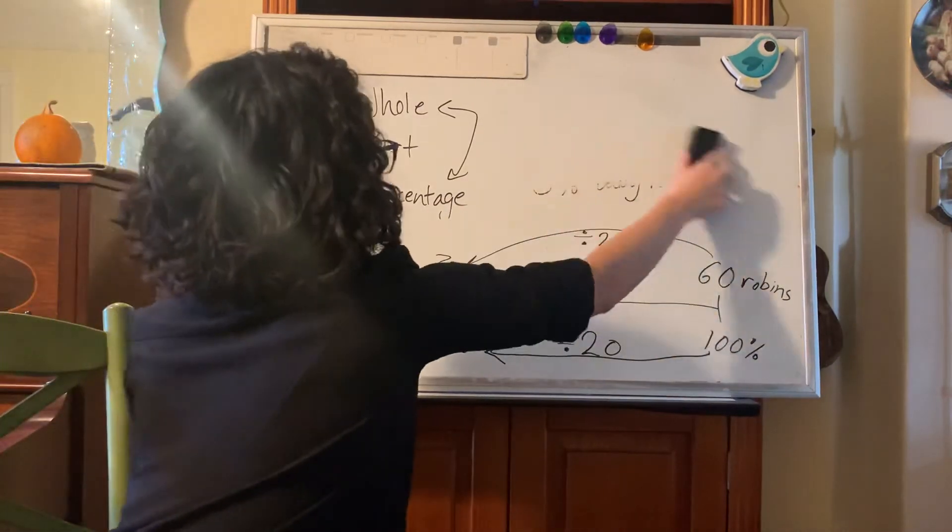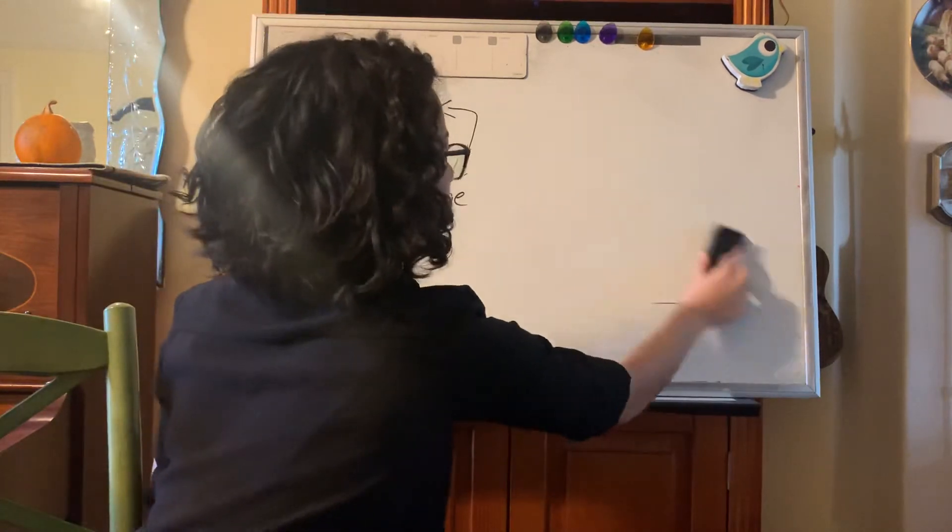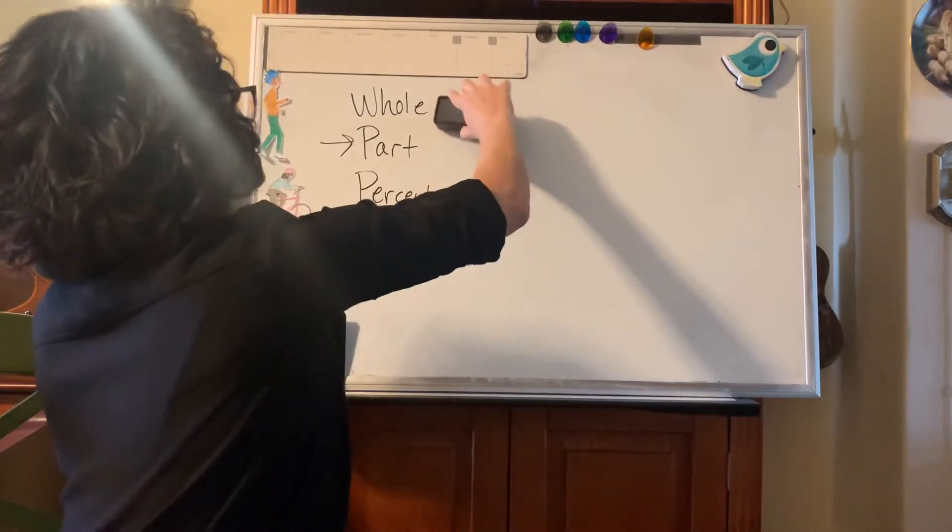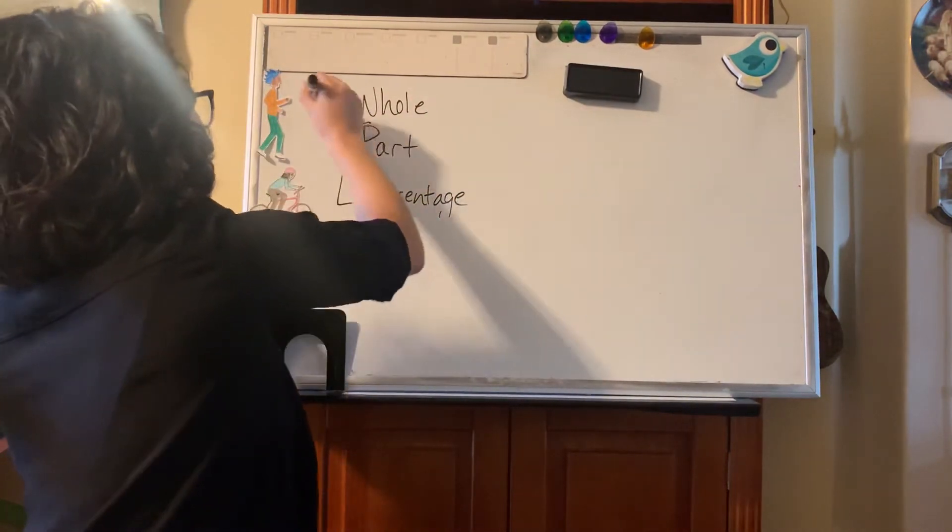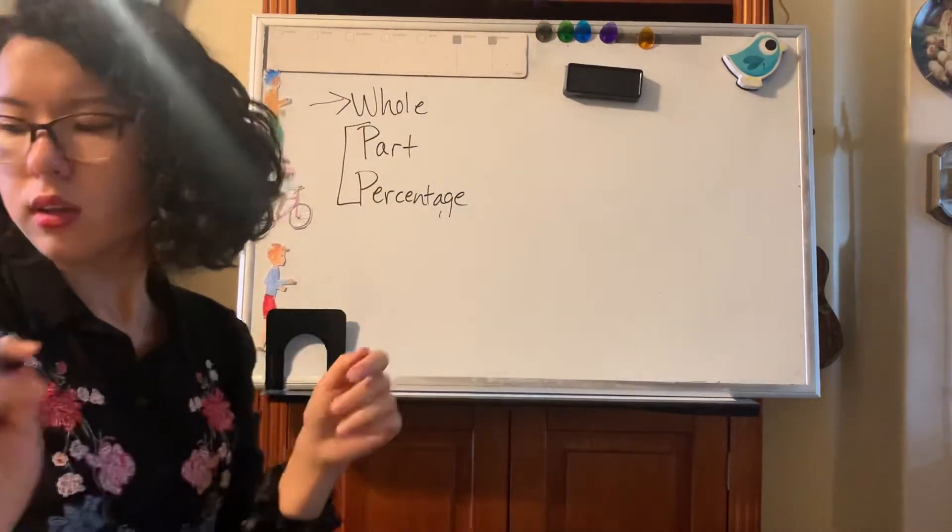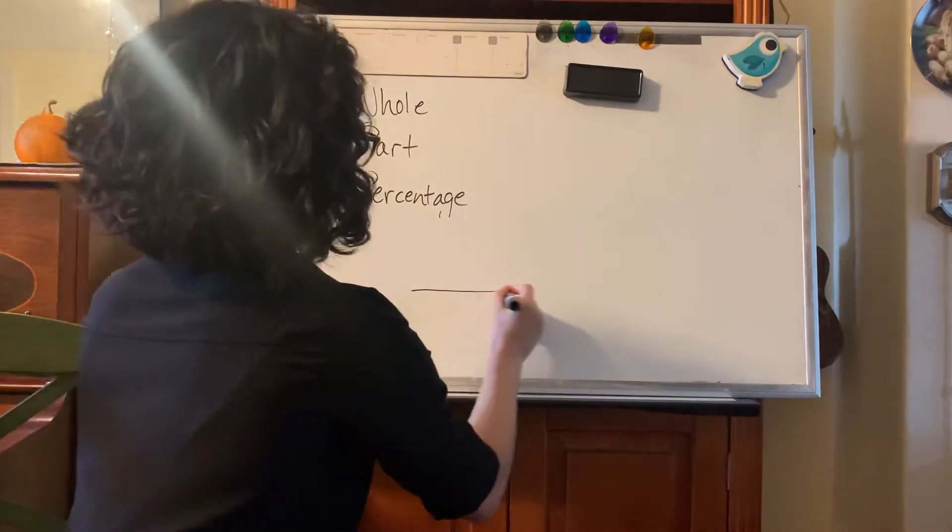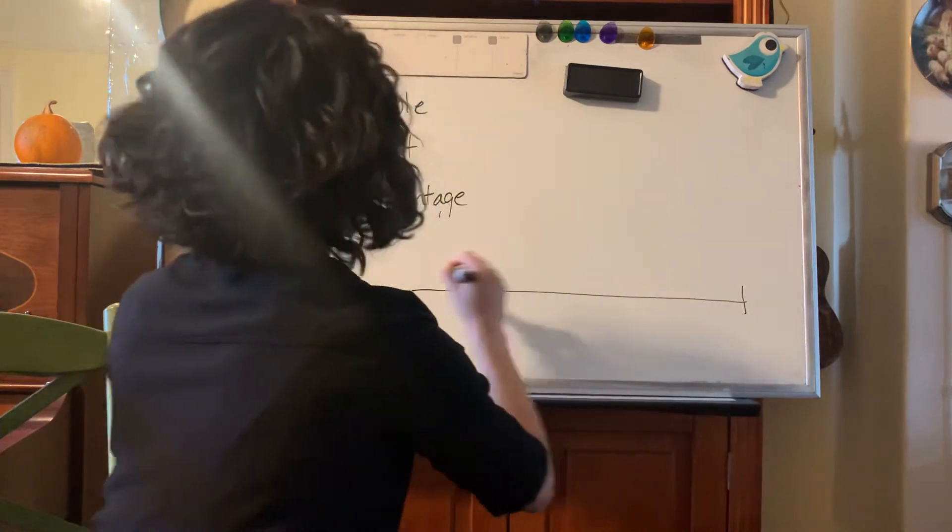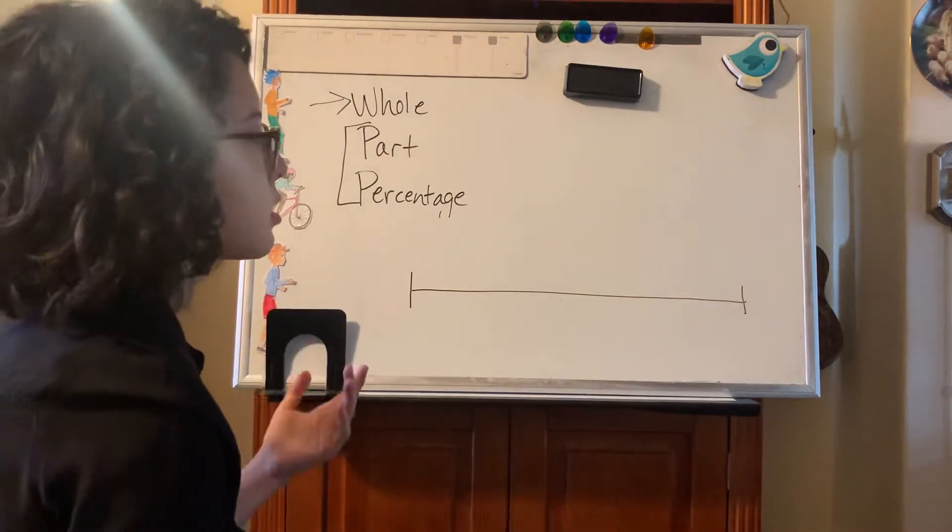All right last type of problem. Now we're going to be given a part and a percentage and we will be asked to find the whole. So we have these two. You want to find that one. Let me think of another. Okay, here's another question and I'm going to just set up my double number line right off the bat so I can write out the information as I'm explaining it.